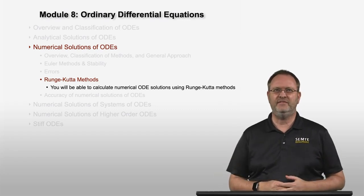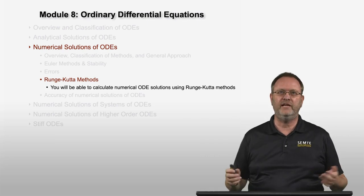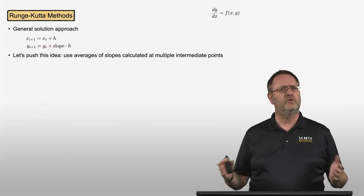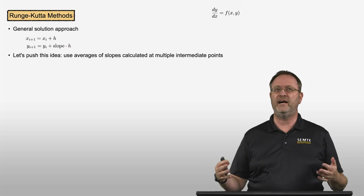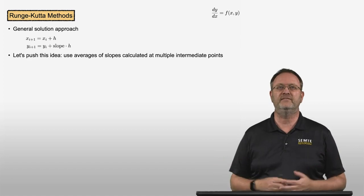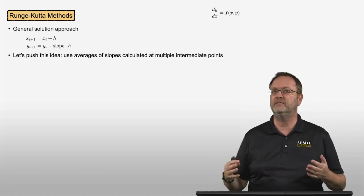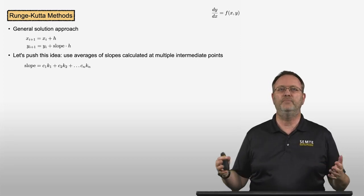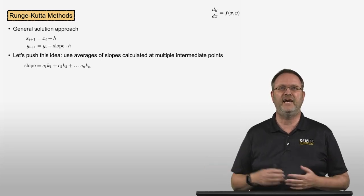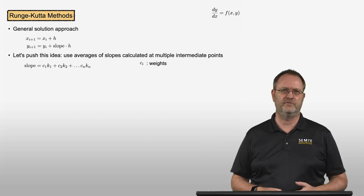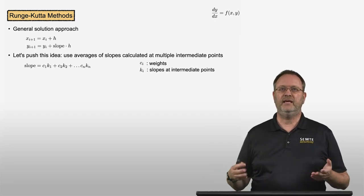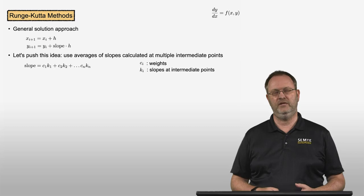Welcome to this video on the Runge-Kutta methods. By the end of this video you will be able to calculate numerical ODE solutions using different Runge-Kutta methods. We saw in a previous video that the approach to arrive at a higher order method was to calculate the slope as the average of slopes calculated at multiple intermediate points. Now let's push this idea by calculating the slope as the weighted average at n intermediate points, where the c_i are the weights and k_i are the slopes at those intermediate points.